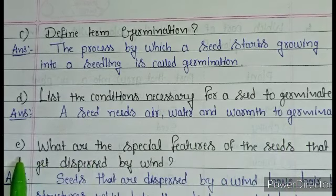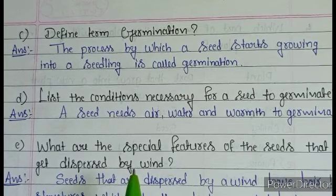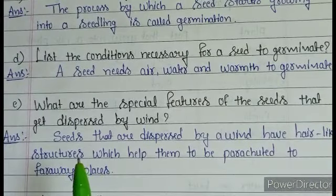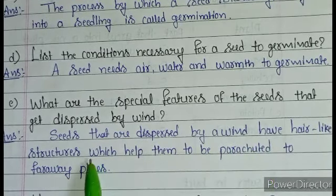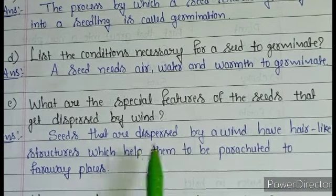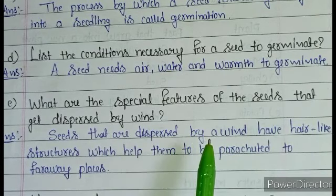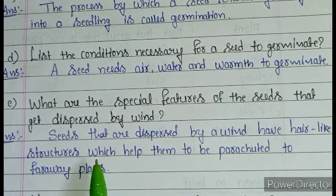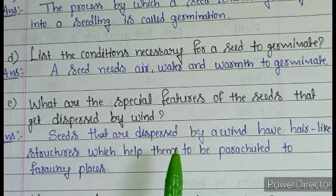Question E: what are the special features of the seeds that get dispersed by wind? Answer: seeds dispersed by wind have hair-like structures which help them to be parachuted to far away places. For example, calotrope — that plant's seeds have hair-like structures which help them to fly to far away places.